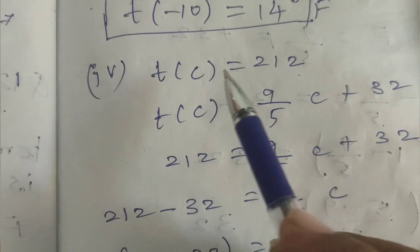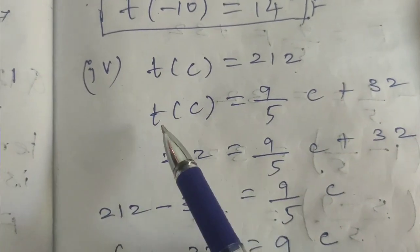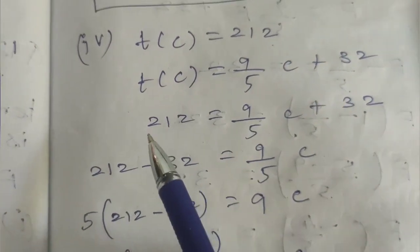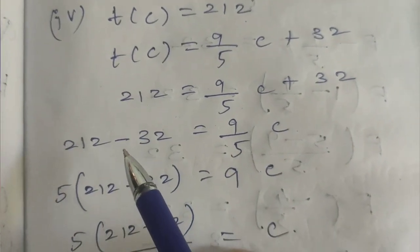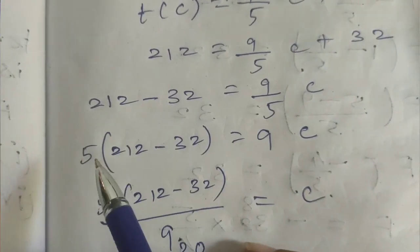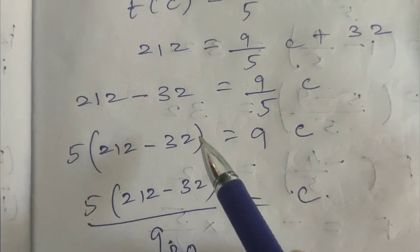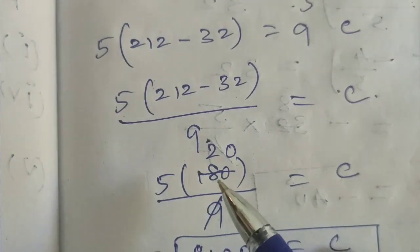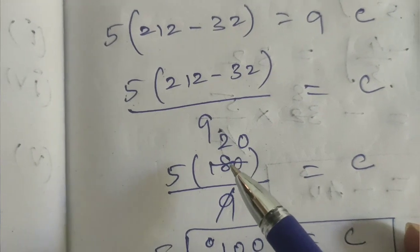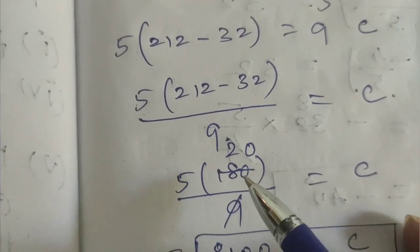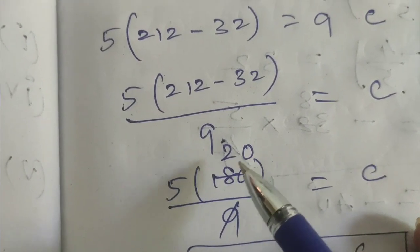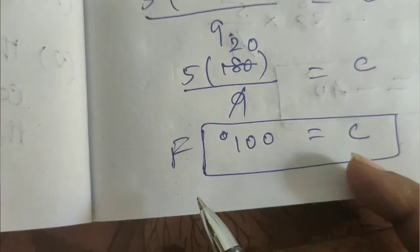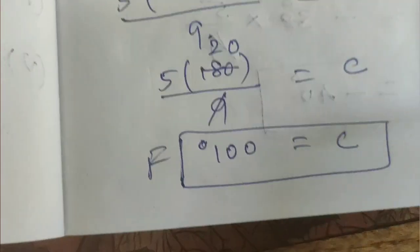The fourth sub-question: T of C equals 212. We set 9 by 5 times C plus 32 equal to 212. Rearranging, 9 by 5 times C equals 212 minus 32, which is 180. Multiplying both sides by 5, 9C equals 900, so C equals 100 degrees. Therefore C equals 100 degrees Fahrenheit.